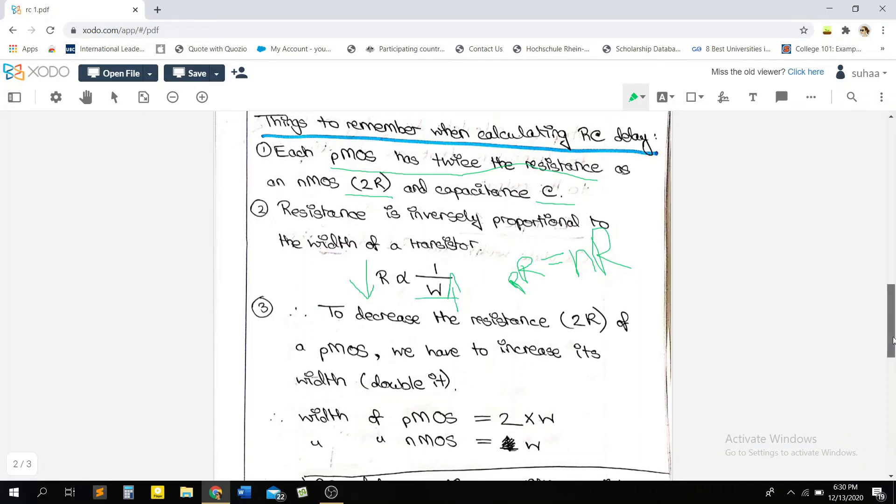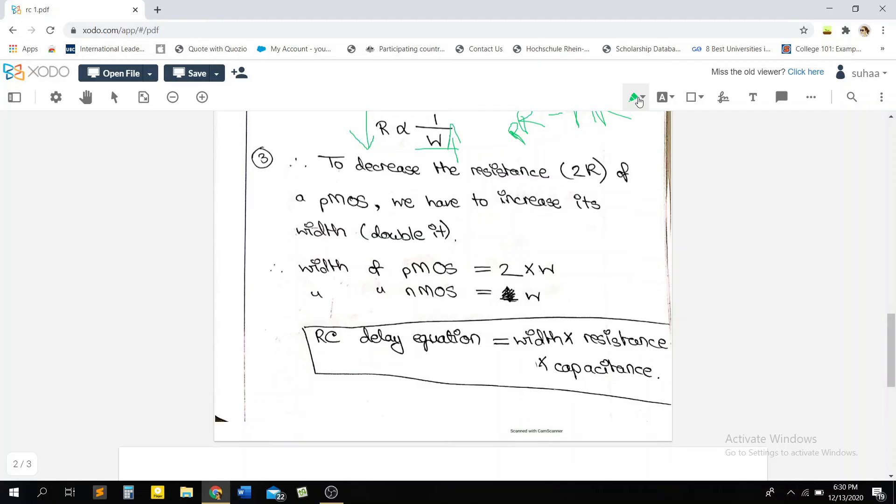And this brings us to the final thing that we need to know. The width of a PMOS is twice the width of an NMOS. You need to understand the concept behind this and you need to remember this, that the width of a PMOS is twice the width of an NMOS.